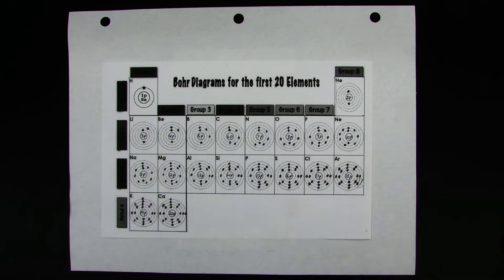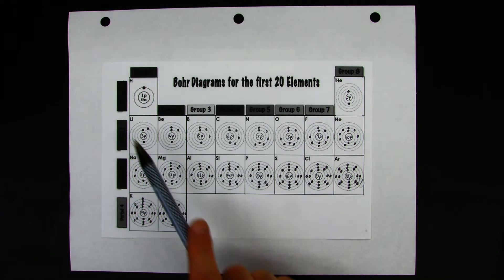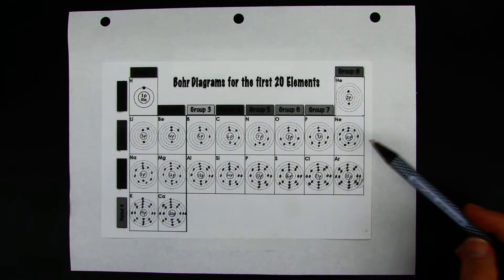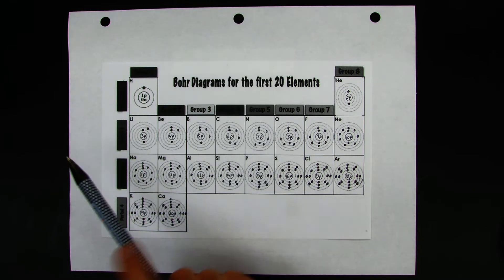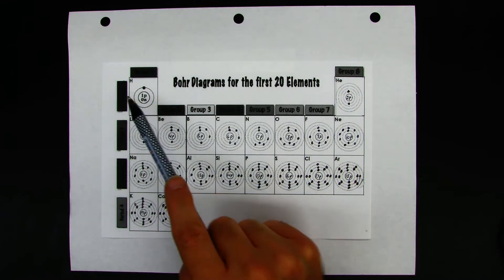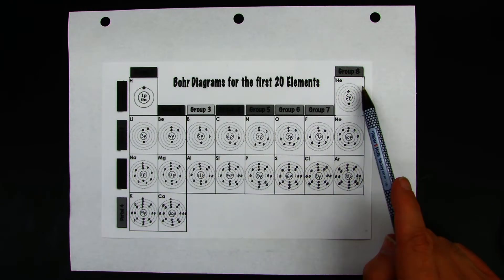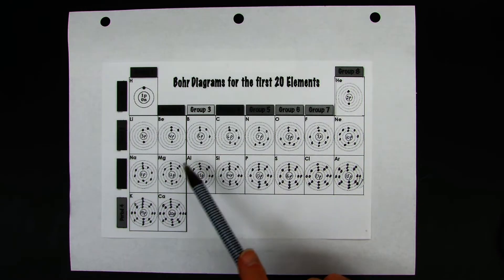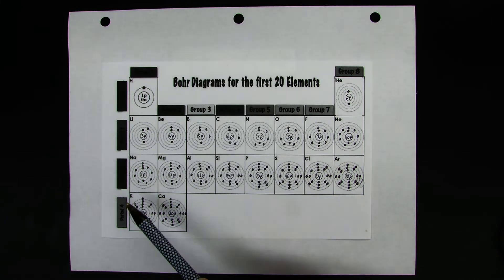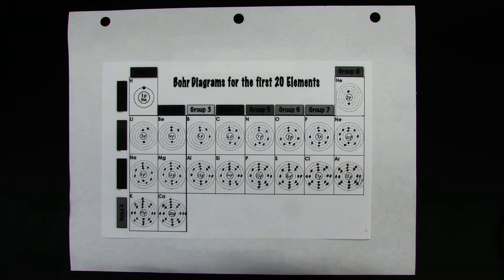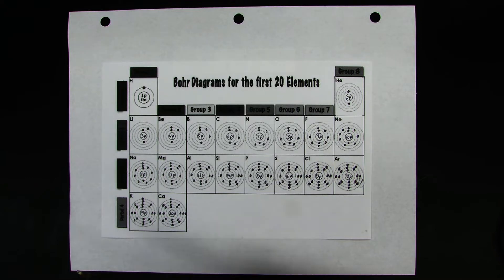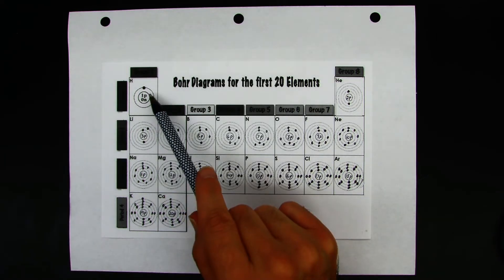In this periodic table you can see that the elements are represented by the Bohr models. What I want to point your attention to are the periods and the group numbers. I want you to notice the patterns here with regard to the Bohr model — look at the number of energy levels that are filled with electrons and also where those electrons are located. What do you notice here?